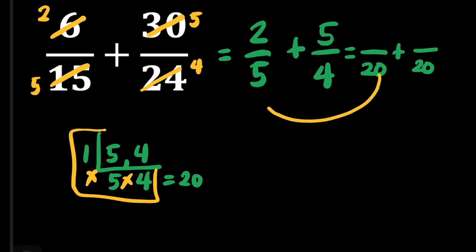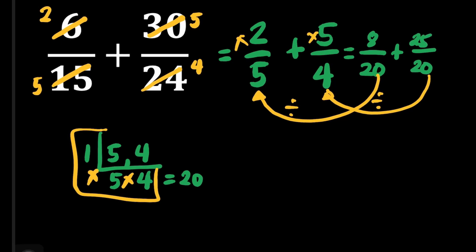20 divided by 5 is equal to 4, times 2 is equal to 8. Next, 20 divided by 4 is equal to 5, times 5 is equal to 25. Now we are ready to add these two fractions because they're already similar. That's going to be 8 plus 25 is equal to 33, then copy the denominator which is 20.